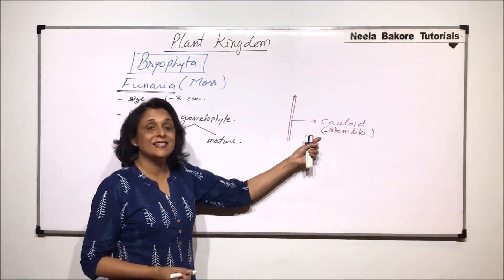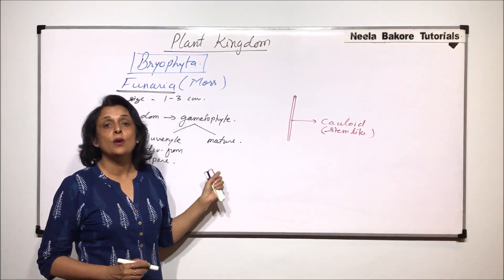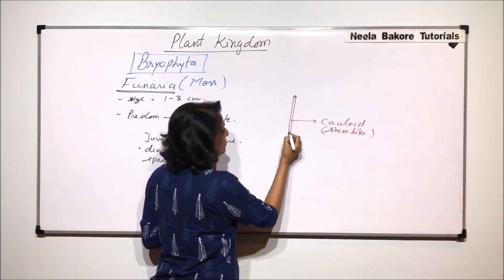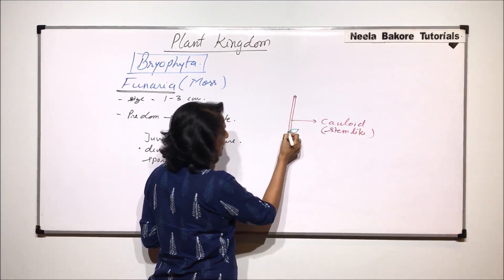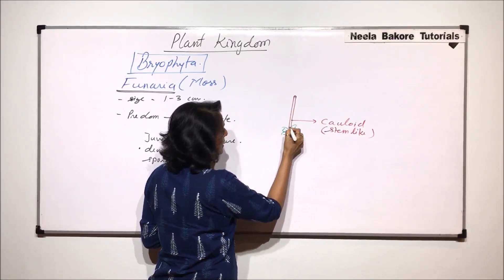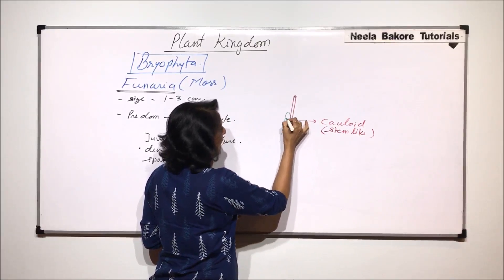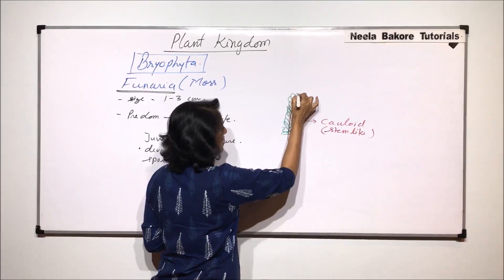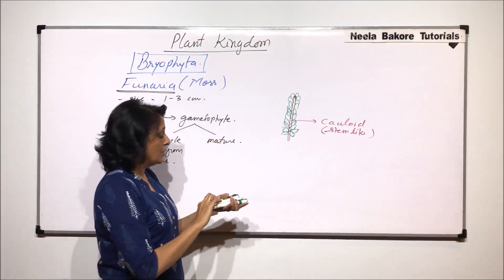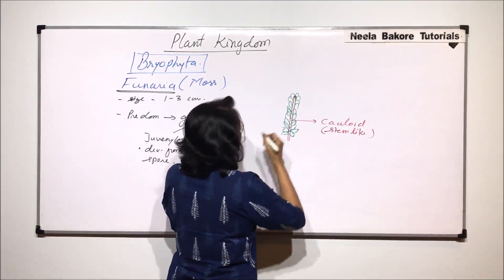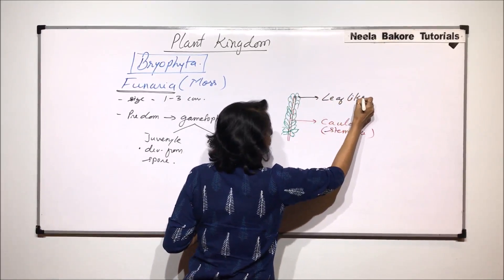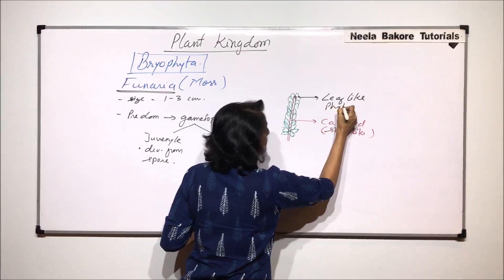On this stem-like structure grow leafy structures. So these leafy structures are spirally arranged all around this axis and we find all this green structure which is growing here. So this green structure which is the leafy structure or we can call it leaf-like structure or phyloid.